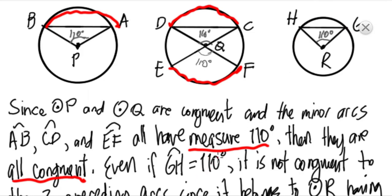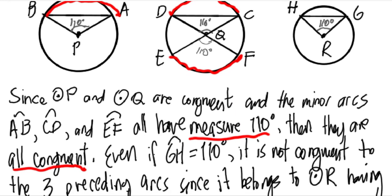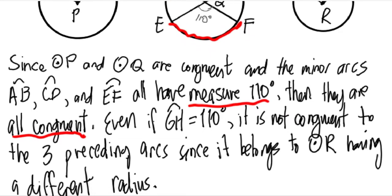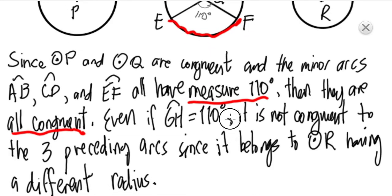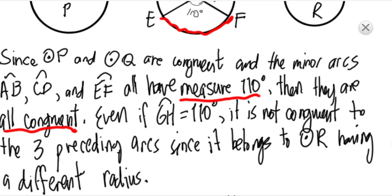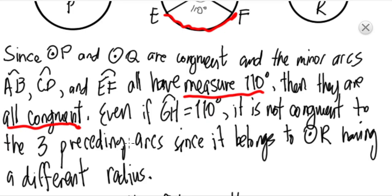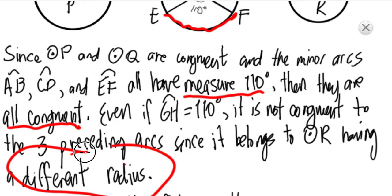Notice that in circle R we have arc GH where it measures 110 degrees. Though the measures are equal, the circles are not congruent, so arc GH is not congruent with arcs AB, CD, and EF. It belongs to circle R which has a different radius — and that's a big no-no.